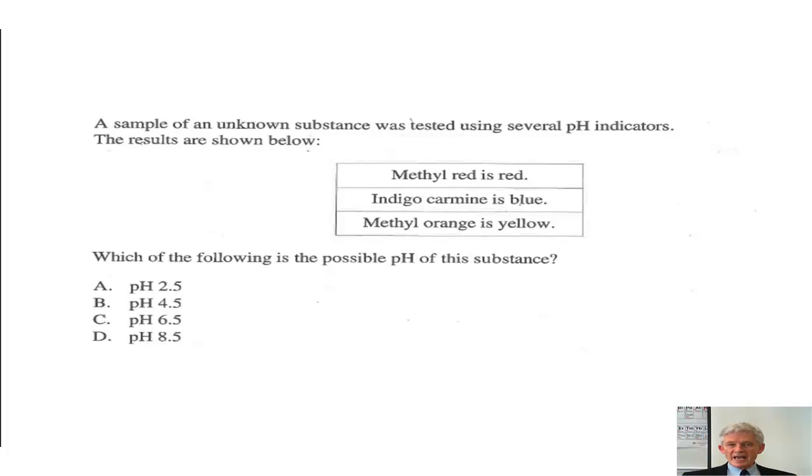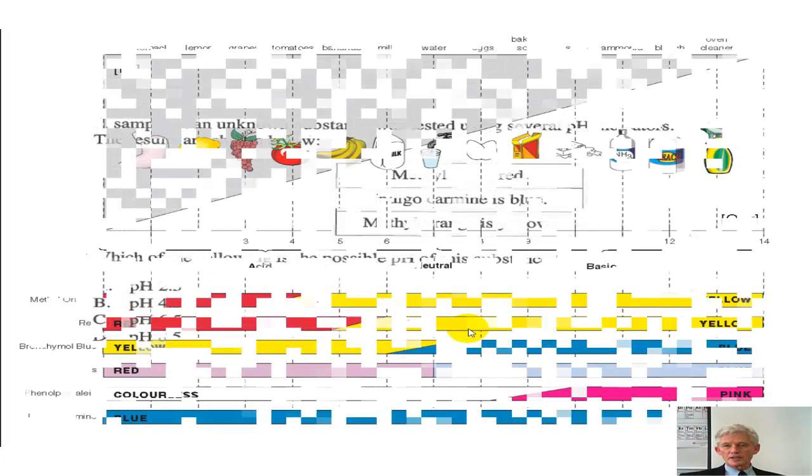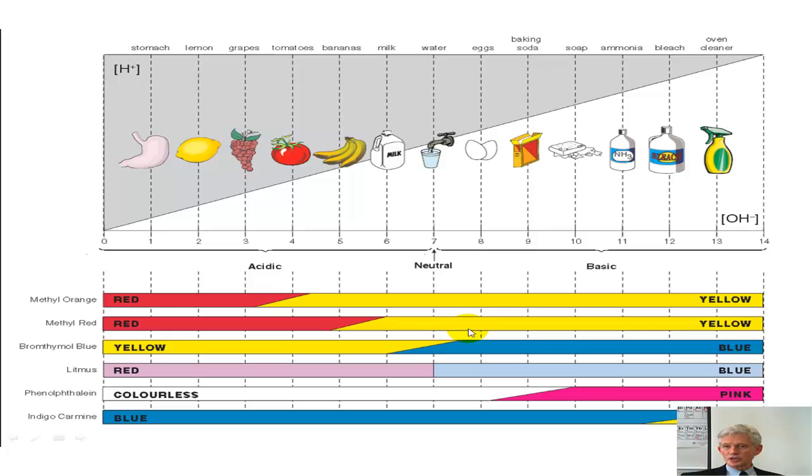Question number one. A sample of an unknown substance was tested using several pH indicators - methyl red, indigo carmine, and methyl orange. The results show that methyl red was red, indigo carmine was blue, methyl orange was yellow. So based on that observation, which of the following is the possible pH? You've got a very basic pH, a very acidic pH, and then you've got these two pHs hovering around the middle. To answer a question like that, you definitely are going to need your chart from your data booklet.